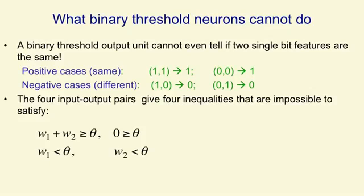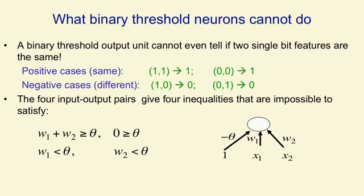So there's clearly no way to satisfy all four inequalities. To put it another way, if you look at the binary decision unit where we put the threshold as a negative weight on an input line that always has a value of one, there's no way to set the threshold and the two weights so that it gets all four cases right. We can also see this geometrically.